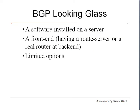So what is BGP looking glass? BGP looking glass is a software installed on top of a server. What we access is a web page — that's the front-end — and that front-end has connectivity to back-end route servers. It could be a real router or some software at the back-end, which provides you some limited access. We're going to have a look at one of those so you understand what we're actually talking about.